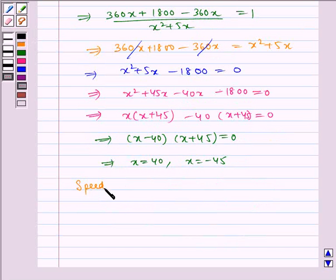Speed cannot be negative. Therefore, x equals minus 45 is not possible.